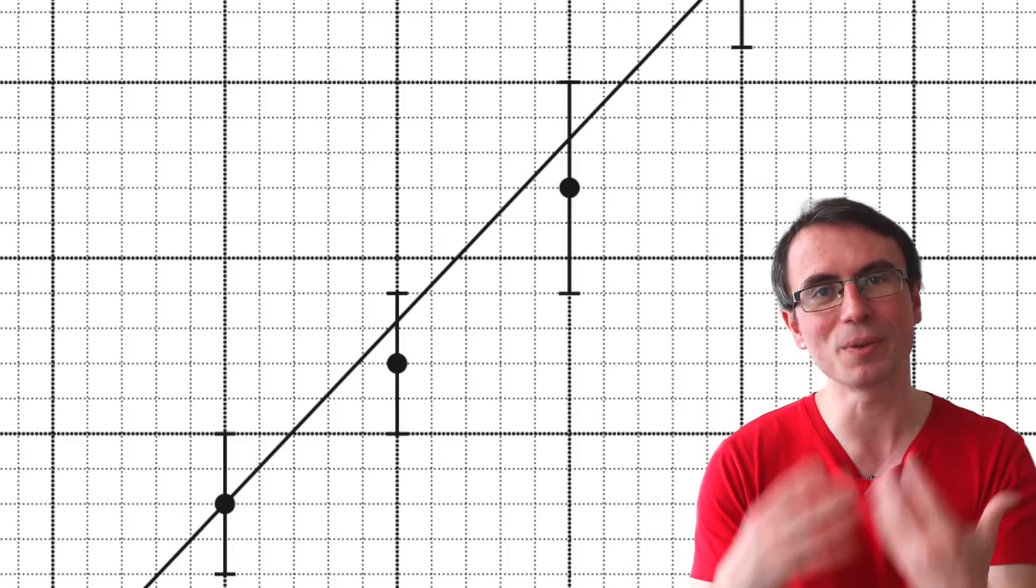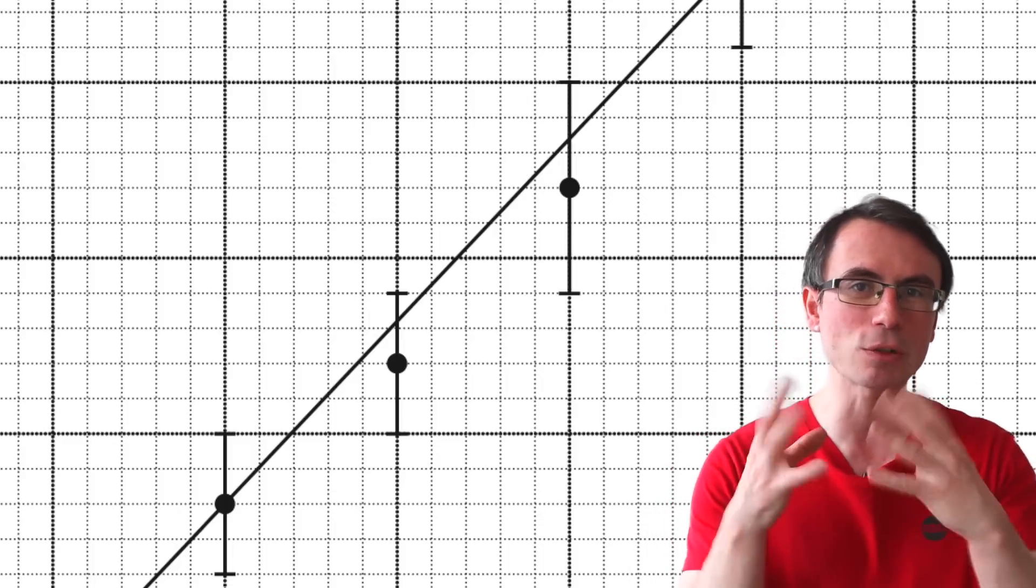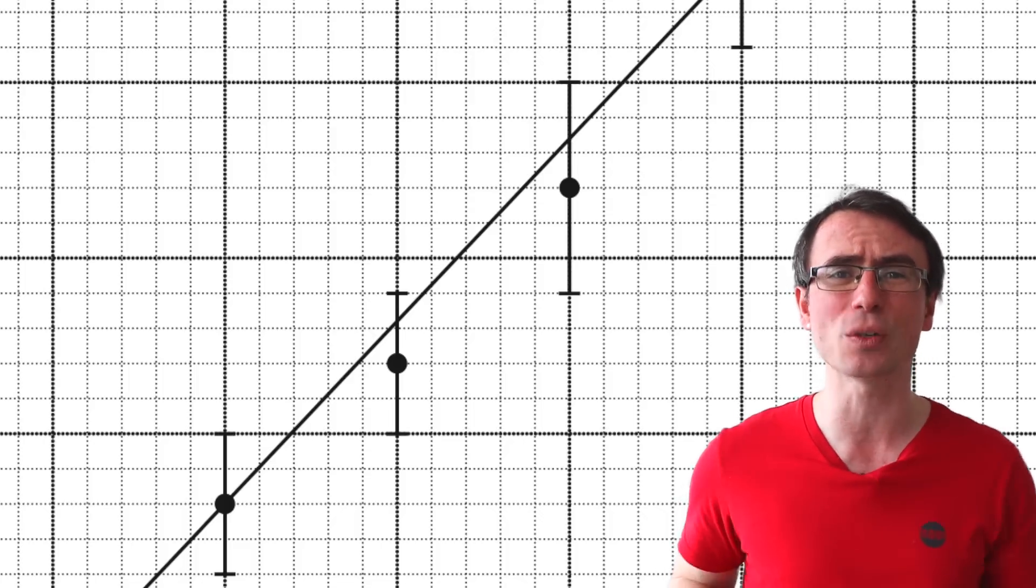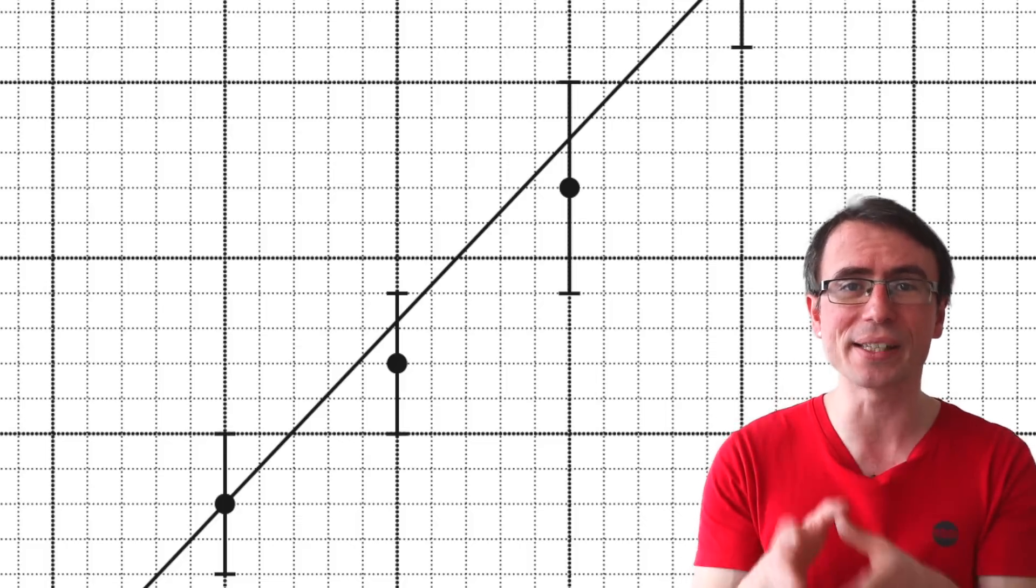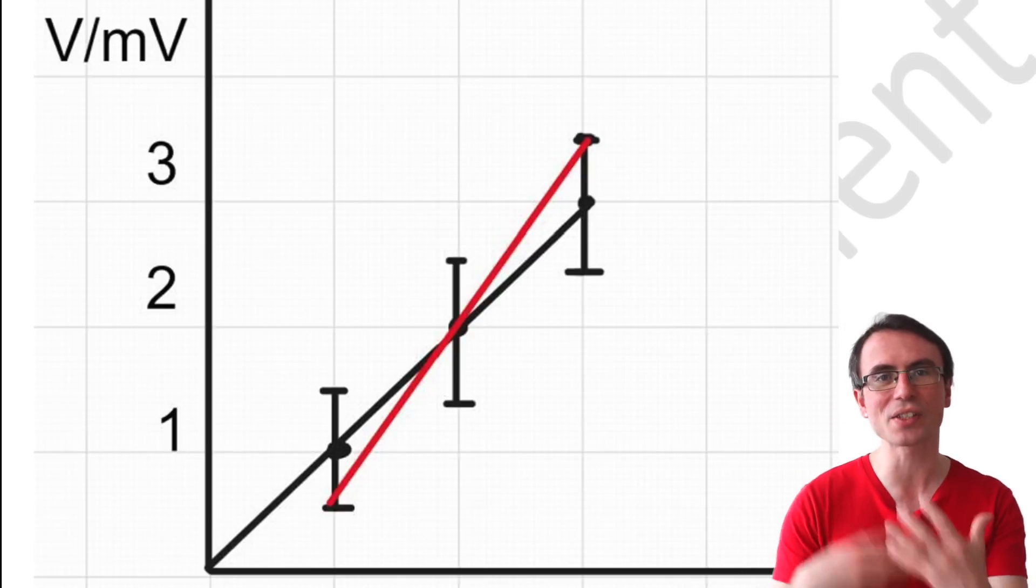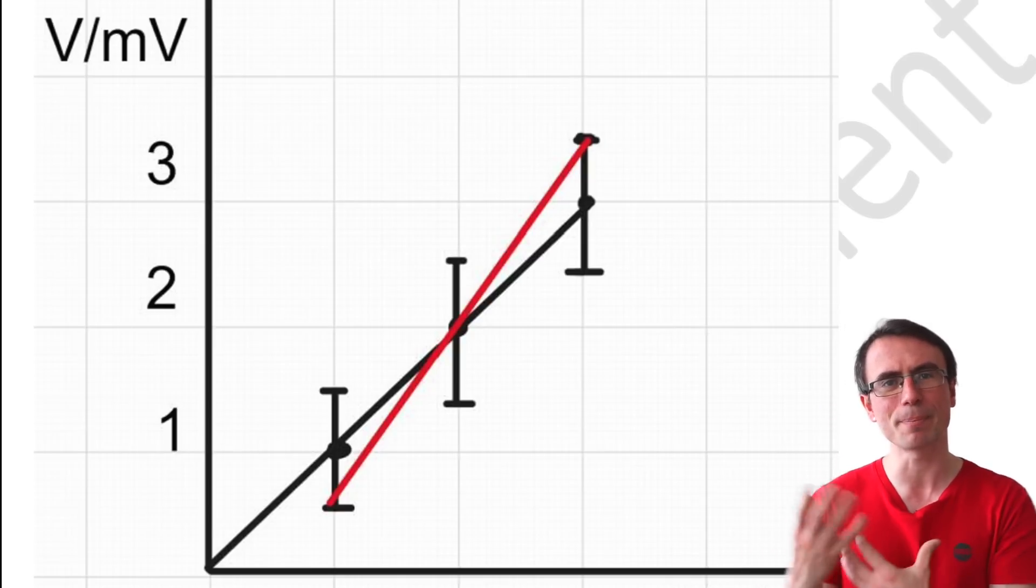Be confident in dealing with error bars. Remember that the length of an error bar is actually twice the absolute uncertainty in a quantity and it represents the region where the data point is bound to be. Whenever we see a question with error bars, chances are that they'll probably ask us about the line of worst fit and line of best fit.